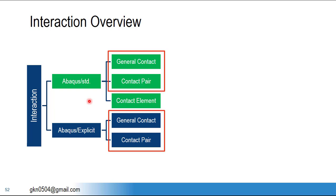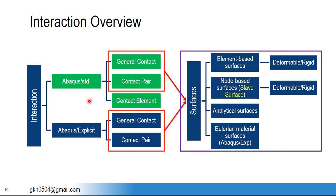General contact and contact pair need reference surfaces called contact surfaces or interaction surfaces. To define those interaction surfaces we have four methods: you can define them by element, by nodes, by analytical surface if you have an analytical rigid component, and by Eulerian material surfaces when you are using Eulerian components and need to define contact.